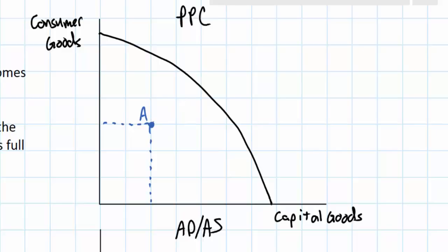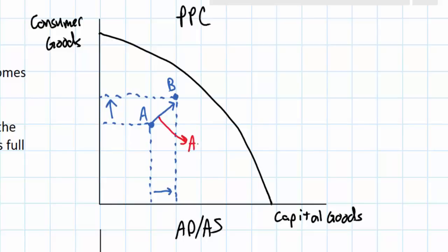A movement from point A to a point closer to the PPC — I'll label this point B — represents economic growth. There is an increase in the output of both capital goods as we move along the horizontal axis and consumer goods as we move along the vertical axis. This movement from point A to B represents actual economic growth.